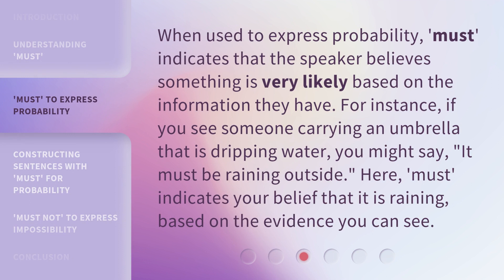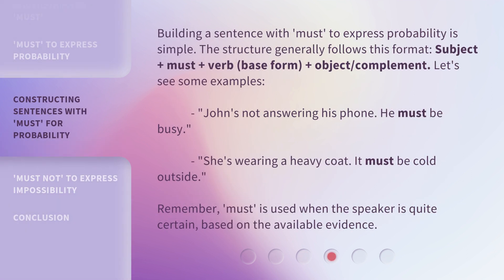When used to express probability, 'must' indicates that the speaker believes something is very likely based on the information they have. For instance, if you see someone carrying an umbrella that is dripping water, you might say, 'It must be raining outside.' Here, 'must' indicates your belief that it is raining based on the evidence you can see. Building a sentence with 'must' to express probability is simple. The structure generally follows this format: Subject + must + verb (base form) + object/complement.